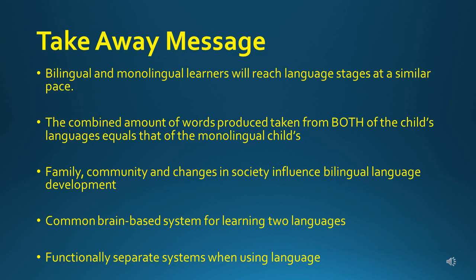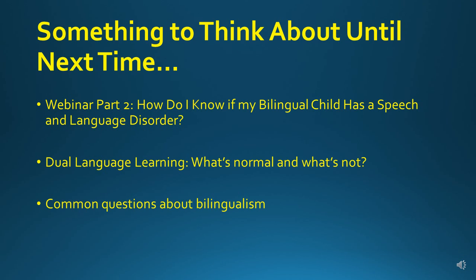That was part one of our webinar series. Here are some takeaway messages: bilingual and monolingual learners will reach language stages at a similar pace; the combined amount of words from both of the child's languages equals that of the monolingual child; family, community, and changes in society influence bilingual language development; and bilingual learners have a common brain-based system for learning two languages, but also have functionally separate systems when using language. Our next webinar will answer the question: how do I know if my bilingual child has a speech and language disorder? Until next time, think about what may be normal in bilingual language development and what's not. Thank you very much for your time and attention — I look forward to our next webinar together.